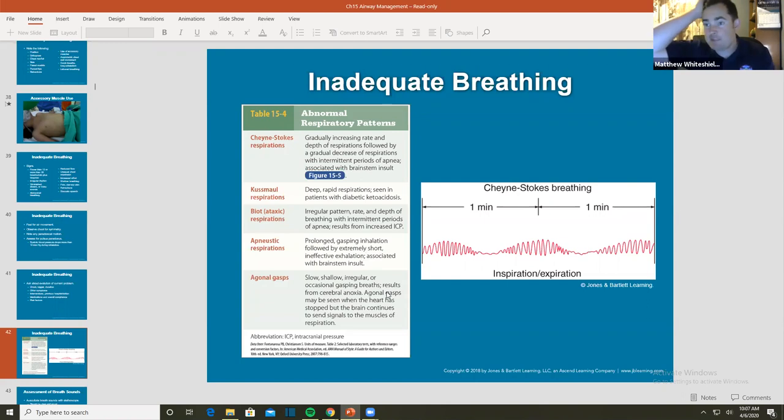Last thing I'm going to talk about before our break. Agonal respirations is not normal respirations - slow, shallow, irregular, occasional gasping of breaths. So you might see this patient do this, and they're like, what the hell was that? And then they don't breathe for a little while and then they do it again.